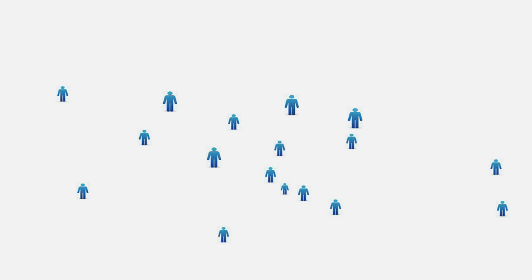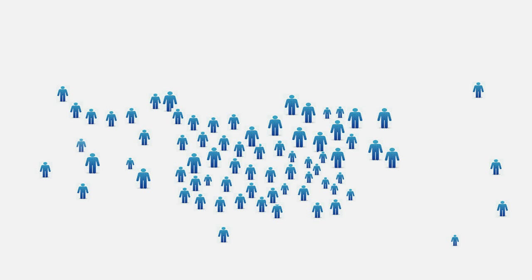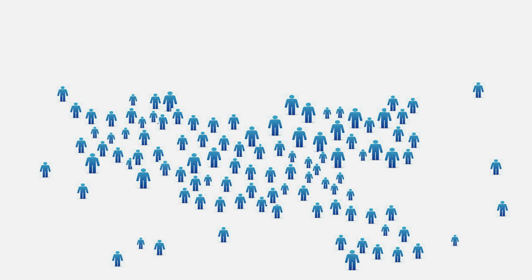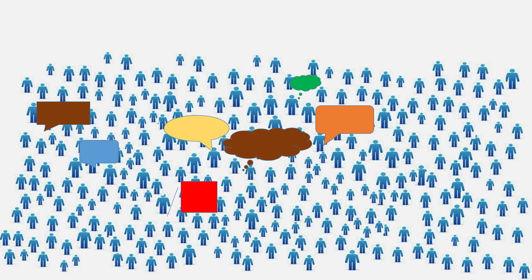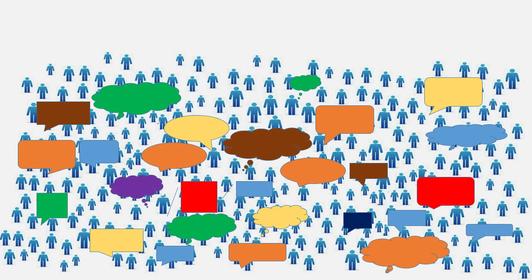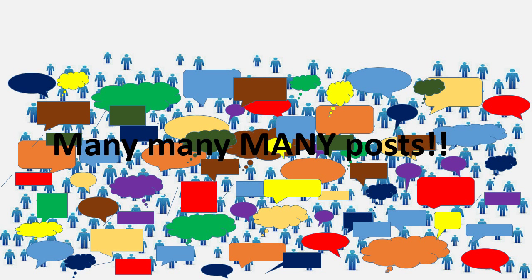Let's talk about social networking. There are around 2 billion active social networkers in the world today — nearly a third of the world's population. On average, people spend about 50 million minutes and post about 1.5 billion pieces of data each day. That's 540 billion posts per year. That's a lot of data.